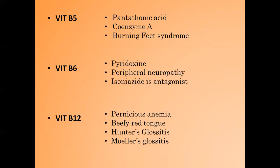Vitamin B6 coenzyme is pyridoxine, and its deficiency leads to peripheral neuropathy. Isoniazid is the antagonist to vitamin B6. Vitamin B12 deficiency causes pernicious anemia, beefy red tongue, Hunter's glossitis, and moeller glossitis.